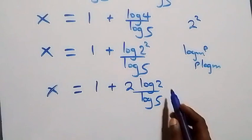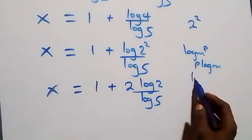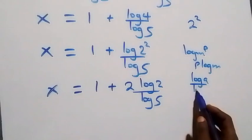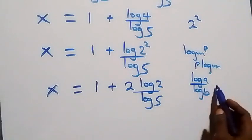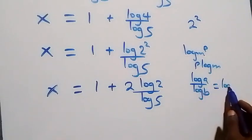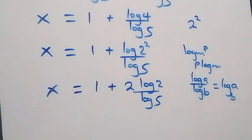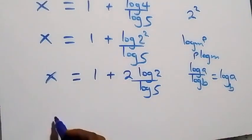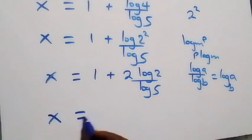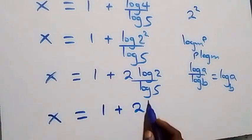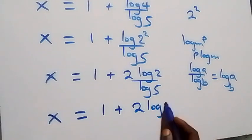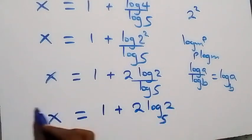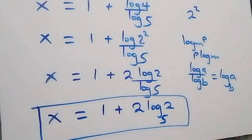Applying the change of base formula — log a over log b equals log base b of a — we get x equals 1 plus 2 log base 5 of 2. So the value of x in this problem is x equals 1 plus 2 log₅2.